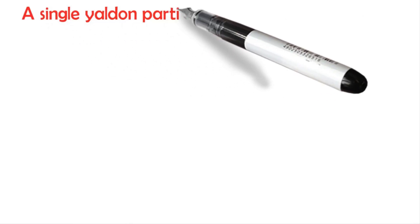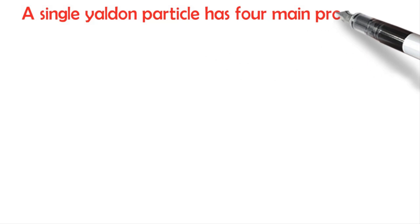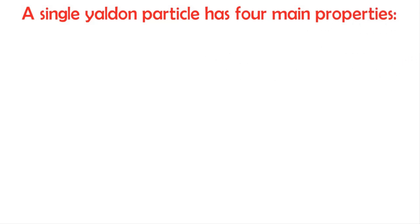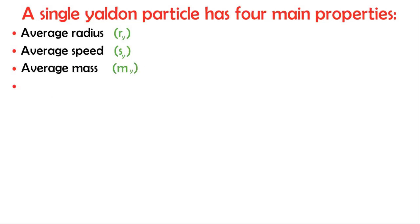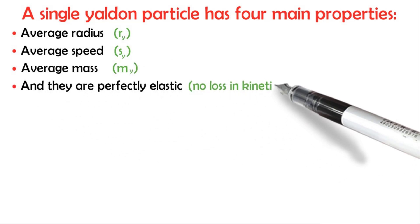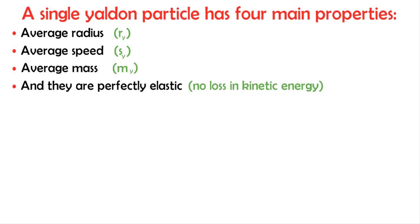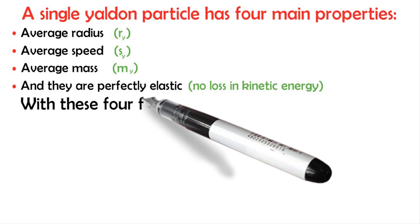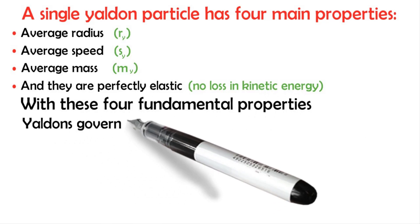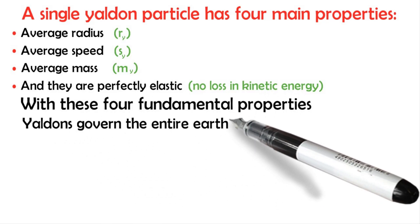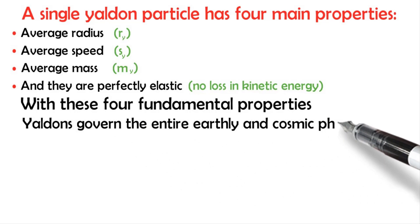A single Yaldon particle has four main properties: average radius, average speed, average mass, and they are perfectly elastic — no loss in kinetic energy. With these four fundamental properties, Yaldons govern the entire earthly and cosmic phenomena.